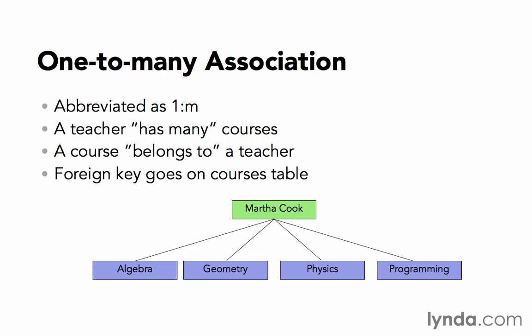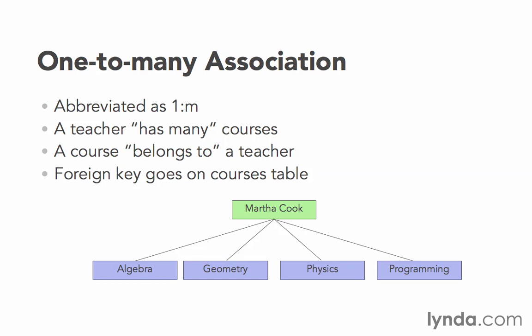In this case, it is not a design choice as to which direction they go — you can't flip it around. If the foreign key was on Martha Cooke, we would store algebra's ID there, but then what would we do with the geometry ID to make that relationship? We have to store the relationship on the belongs-to side of the equation.